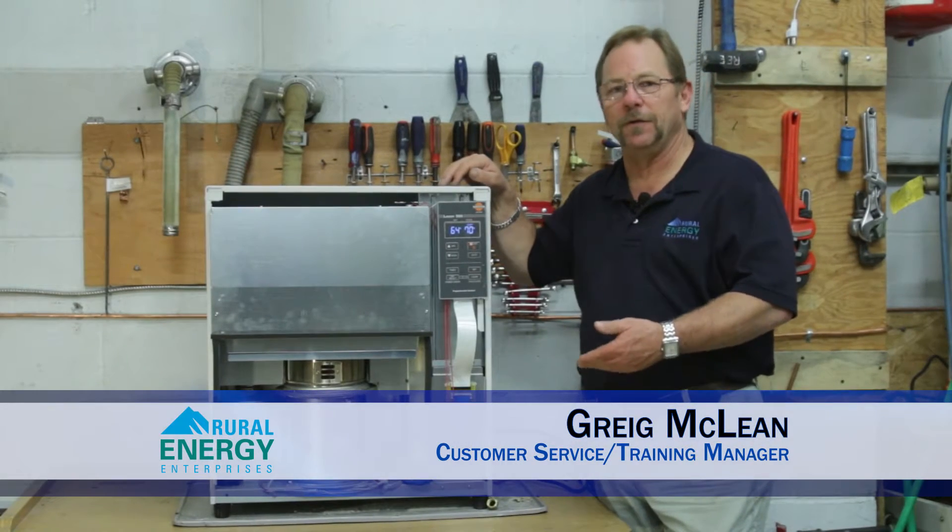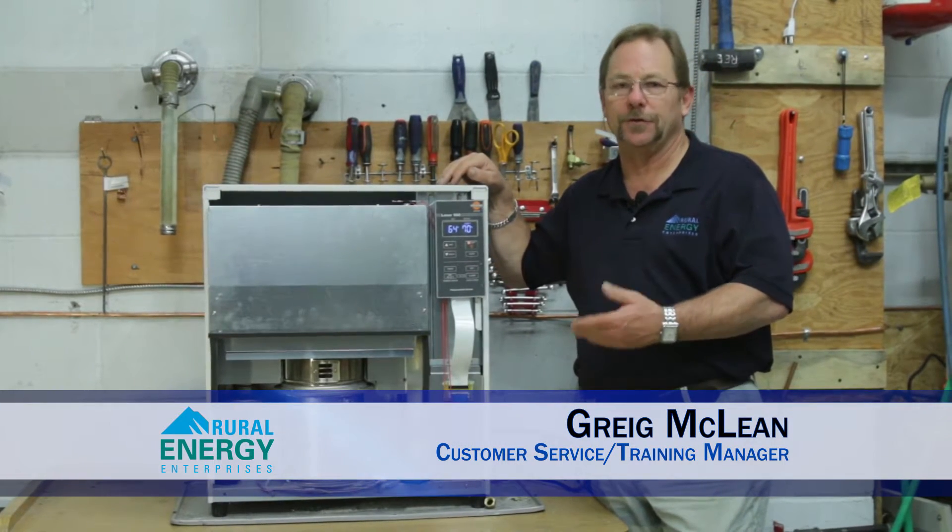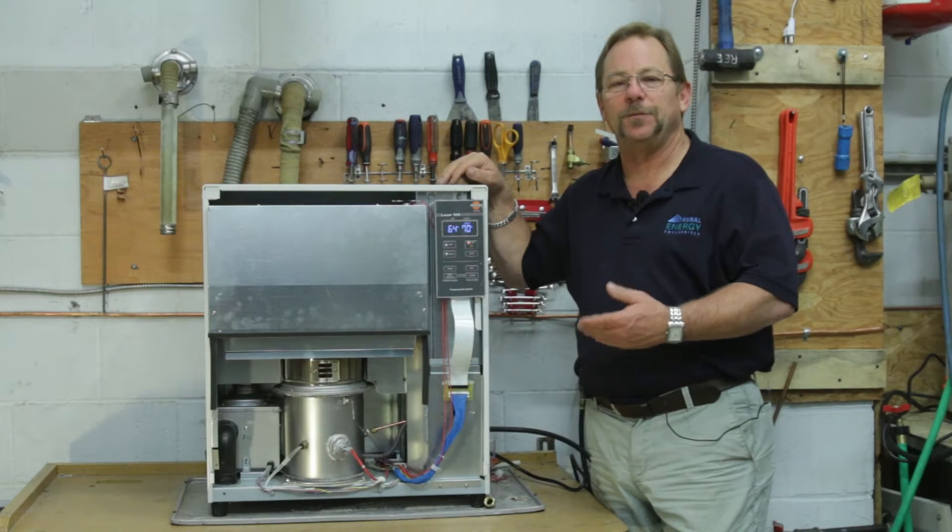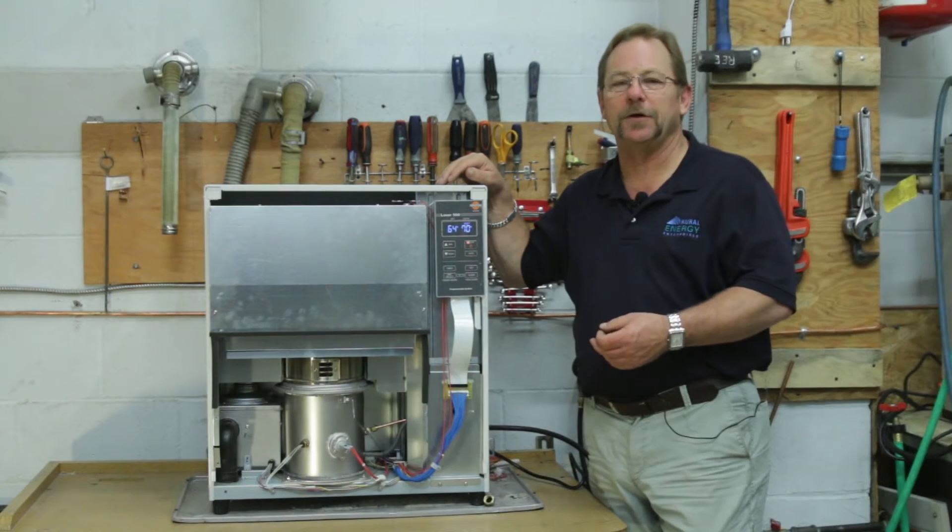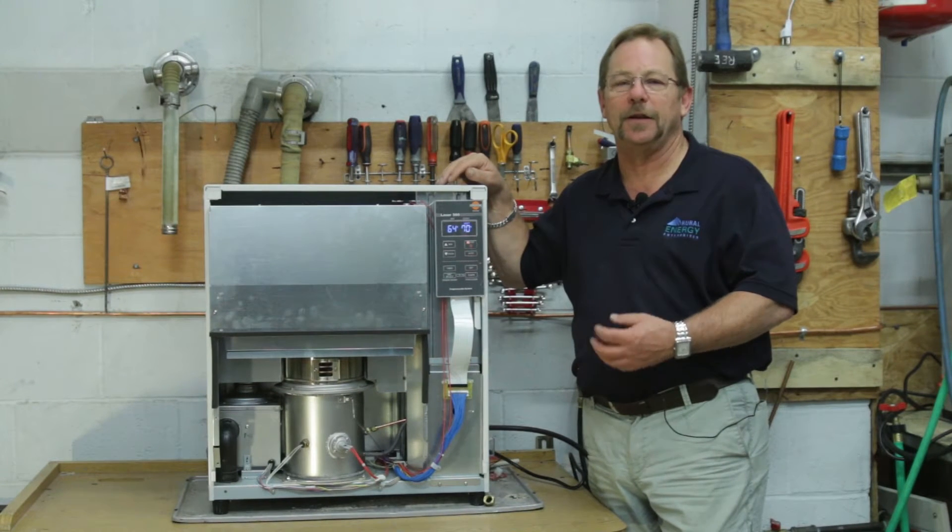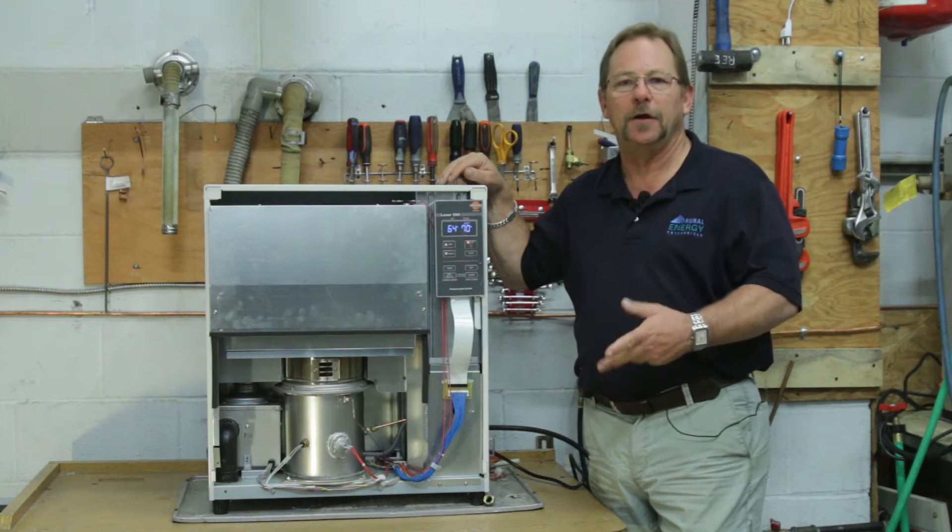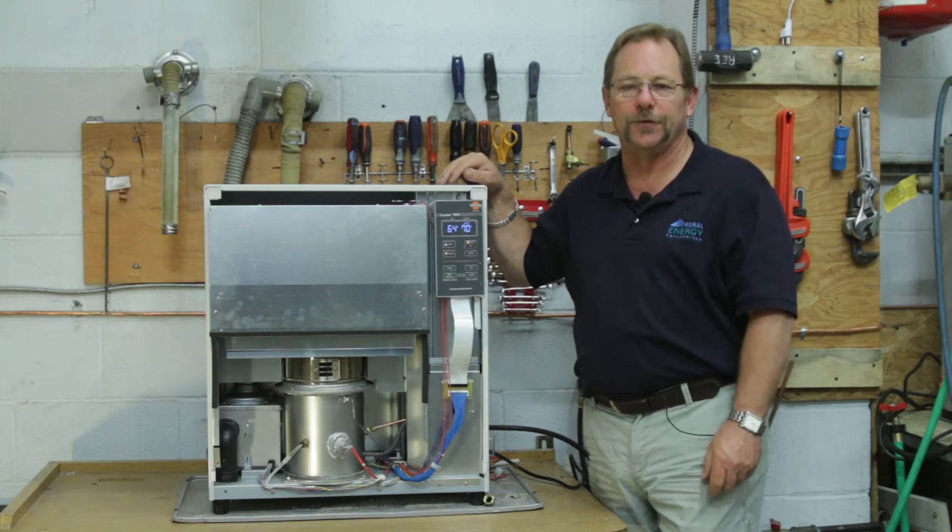Today we're going to ohm out the hot source igniter on the Toyotomi stove. It's important that we ohm the igniter out to make sure that the igniter is operating at its factory manufactured specifications, and the only way to do that is with our multimeter.